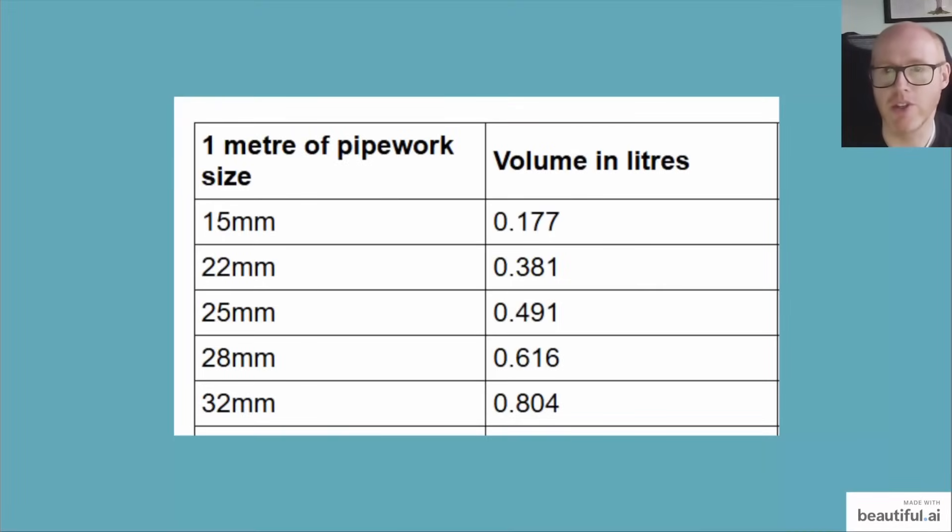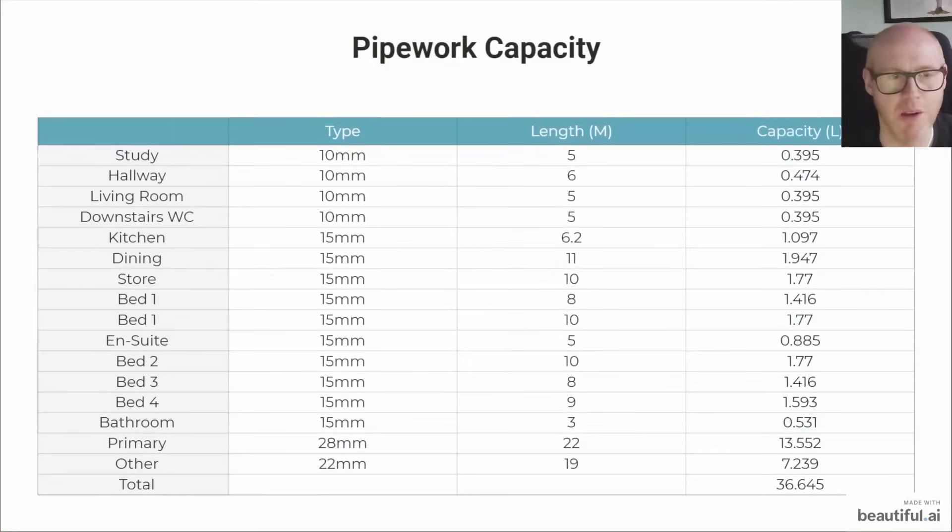To do that you will need to use tables like these. You can find them everywhere. Finding it for 10 millimetre was a bit more difficult, but we did find one in the end. You can see that one metre of 28 mil pipework has 616 millilitres, so quite a considerable amount. Maybe those long pipework runs from a heat pump to a home, maybe they're not such a problem after all if they can boost our system volume. An interesting thought for the installers and engineers to think about.